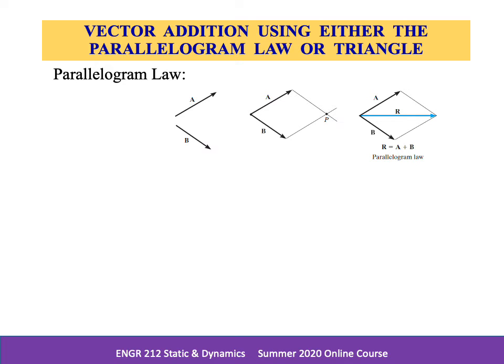When adding two vectors together, it's important to account for both their magnitude and direction. To do this, we use the parallelogram law of addition. To illustrate, the two component vectors, a and b, in this figure are added to form a resultant vector r, which is equal to a plus b, using the following procedure.